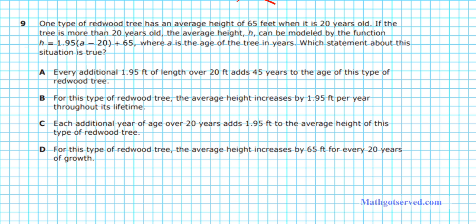Let's take a look at question 9. It says one type of redwood tree has an average height of 65 feet when it is 20 years old. If the tree is more than 20 years old, the average height h can be modeled by the function h equals 1.95 times (a minus 20) plus 65, where a is the age of the tree in years. Which statement about this situation is true?